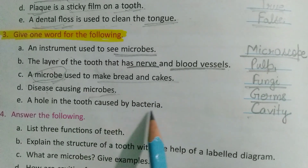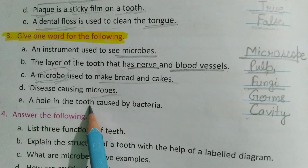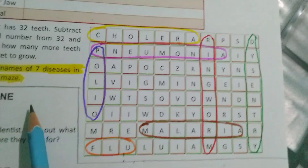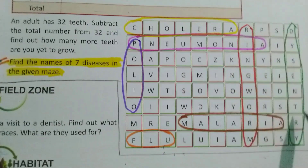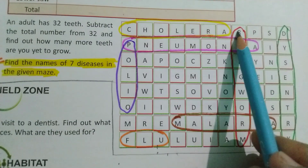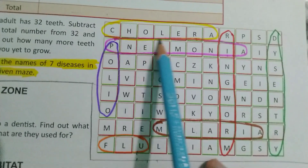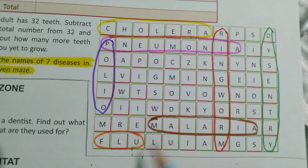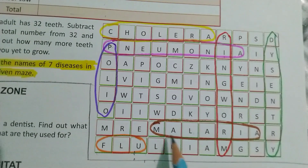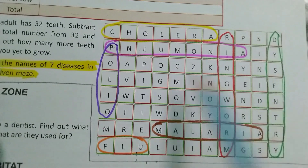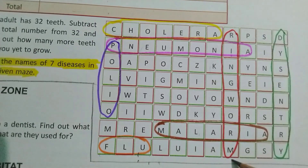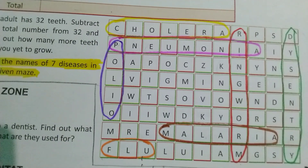Hole in the tooth caused by bacteria — chote chote hole jo hote hain hamare tooth mein, usse kya bolte hain? Cavity. Next, hamare paas ek maze hai jismein se saath diseases find out karni hain. Cholera, polio, flu, malaria, pneumonia, ringworm, and dysentery.